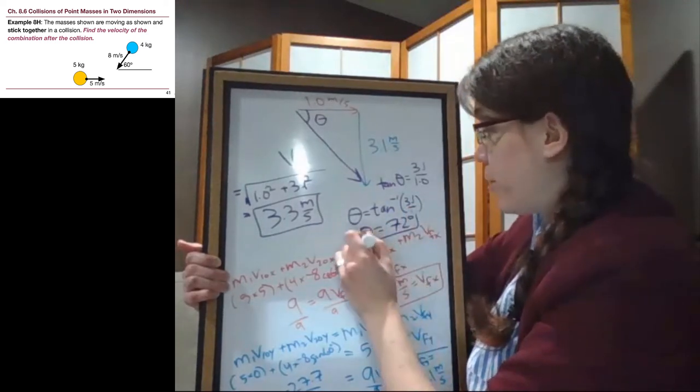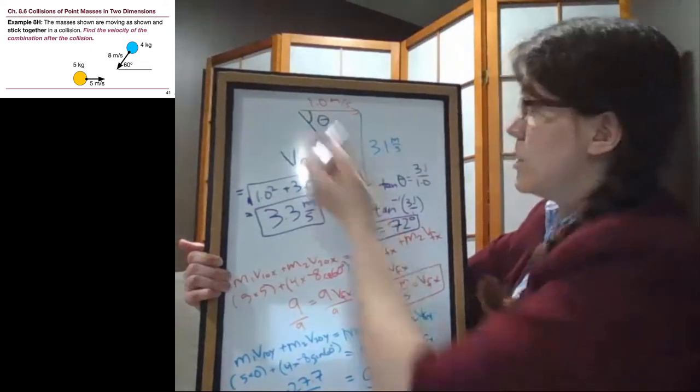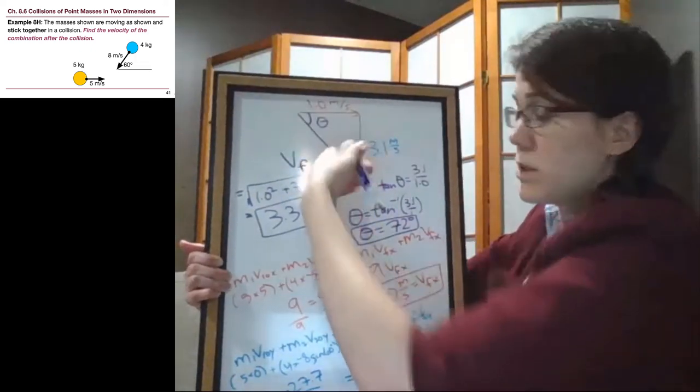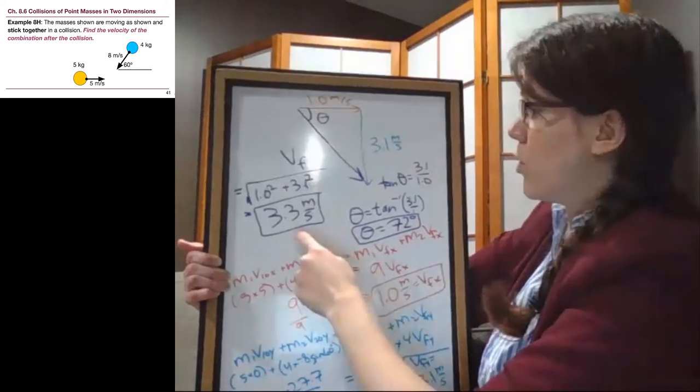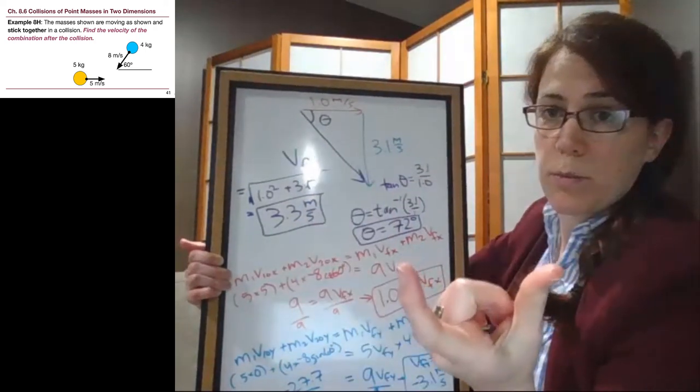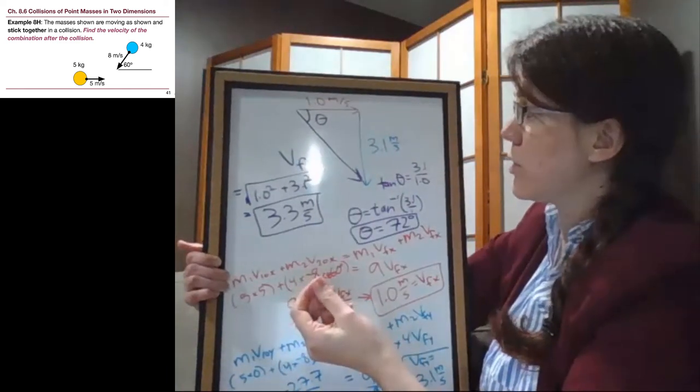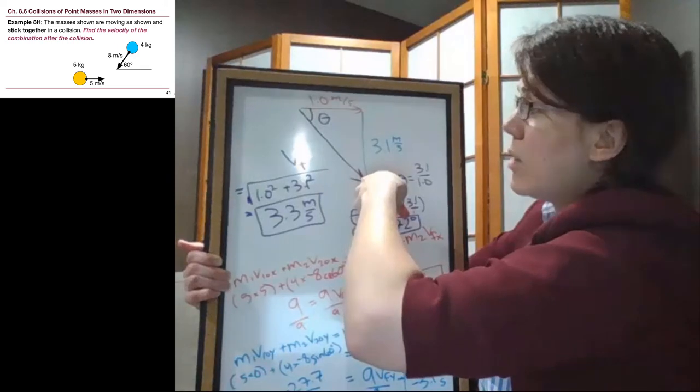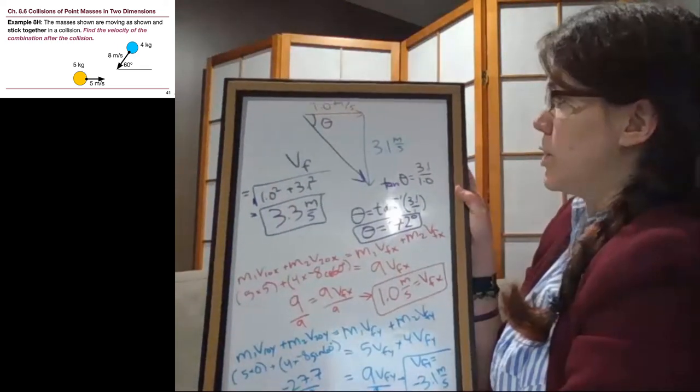And so with the picture, we don't need to do any more, but we need to indicate that that 72 degrees is south of east if we don't have that picture. And so the overall blocks, these two masses, when they hit each other and stick together, they end up moving down at that angle of 3.3 meters per second at 72 degrees.